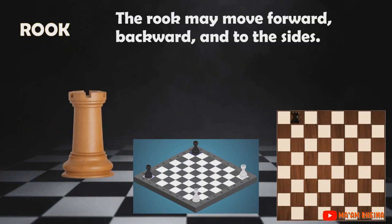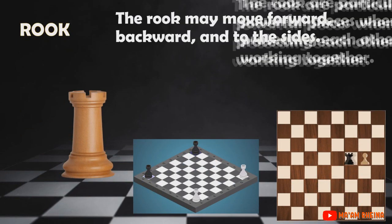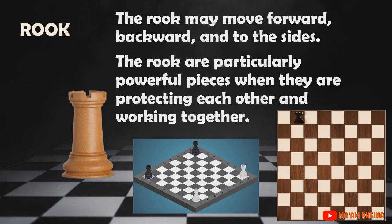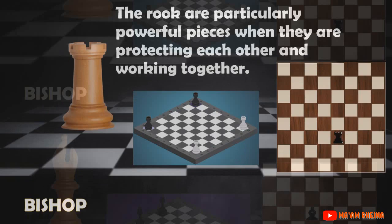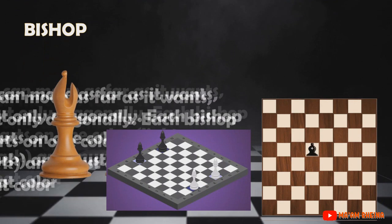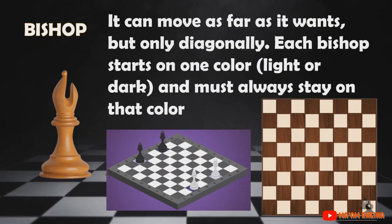The rook may move forward, backward, and to the sides. Rooks are particularly powerful pieces when they are protecting each other and working together. The bishop can move as far as it wants, but only diagonally. Each bishop starts on one color — light or dark — and must always stay on that color. They can capture an opponent's piece by stopping on that piece's square.